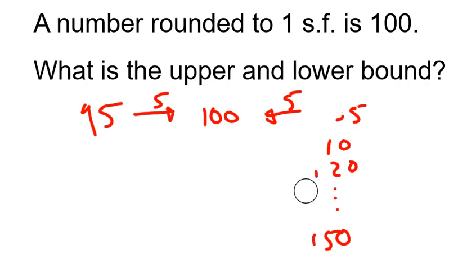So we actually notice that our upper bound is going to be 150, which is a difference of 50. So our bounds aren't symmetrical.